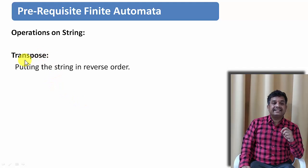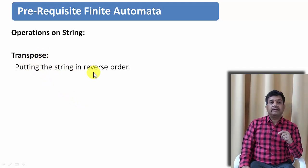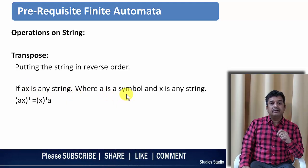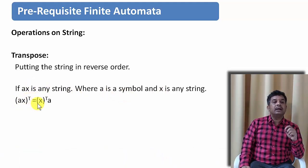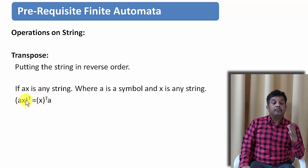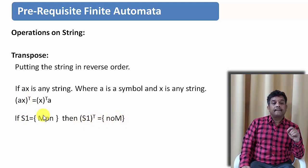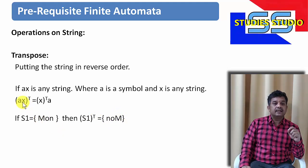One more operation is transpose — putting the string in reverse order. For example, if x is any string and a is any symbol, then the transpose of ax is nothing but x-transpose followed by a. It means the symbol a, which was at the beginning, will be placed at the end. For example, if S1 is 'MON', then S1-transpose will be 'NOM' — by repeatedly applying this rule, moving the front symbol to the end, we get 'NOM'.